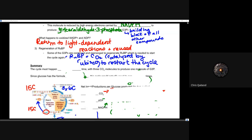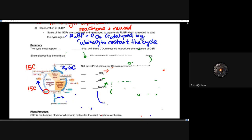Only one sixth of the G3P product is used to make sugar; the rest is kept in reserve to regenerate RuBP. The cycle must happen with three CO2 molecules to produce one G3P molecule. Since glucose is C6H12O6 and G3P only has three carbons, the cycle must go through twice — producing two G3Ps — to create one glucose molecule.